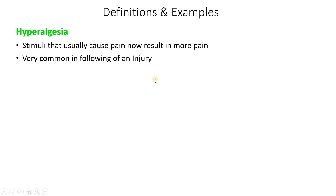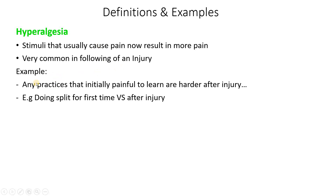After an injury, those same stimuli can result in even more severe pain. This state occurs when you are exposed to an injury — let's say an injury to your leg. Stimuli that usually cause that pain, not the pain from the injury itself, but any other pain, can now result in even more pain once you've had the injury.